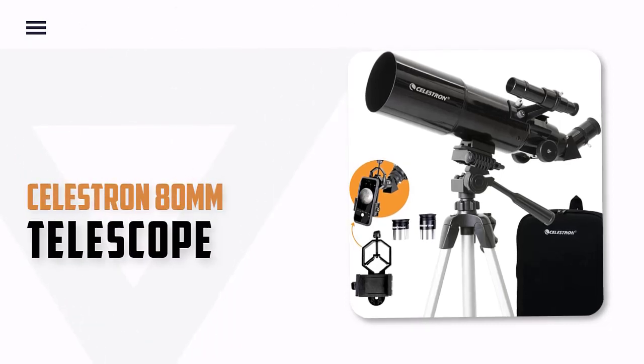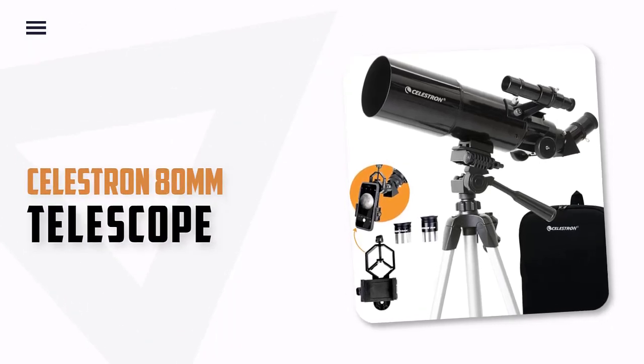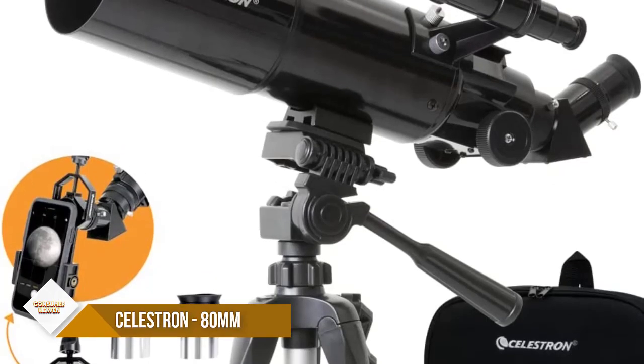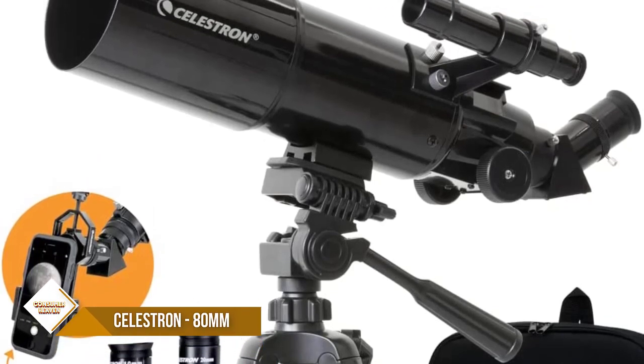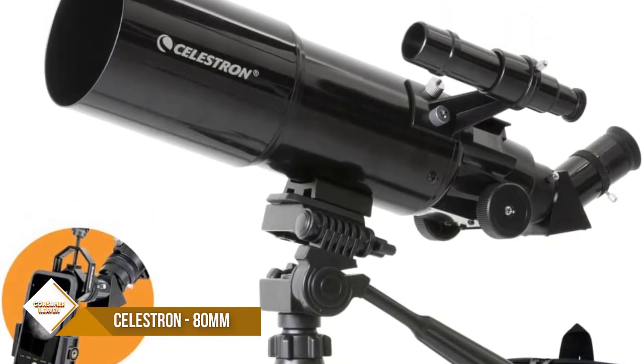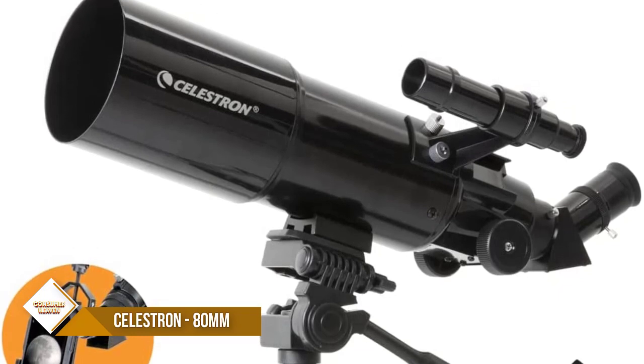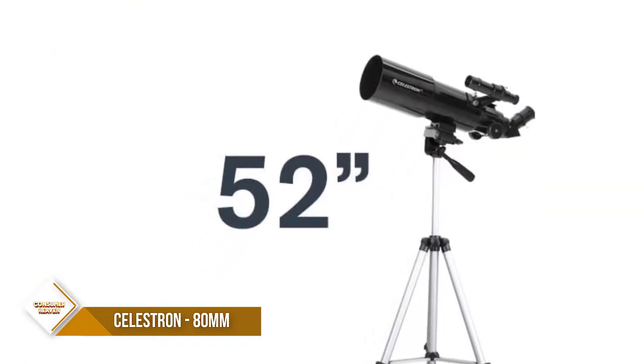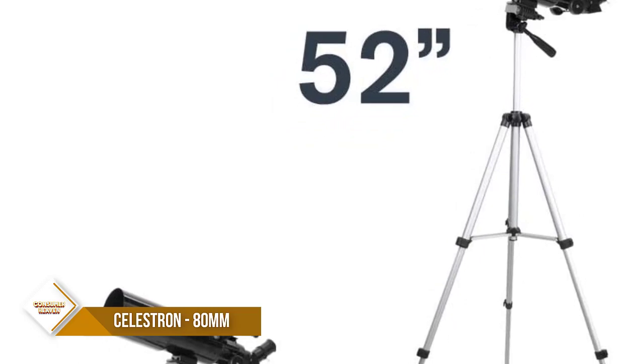Number 3. Celestron 80mm Travelscope Refractor Telescope. The 80mm Travelscope comes complete with fully-coated glass optics, a potent 80mm objective lens, a full-height tripod, bonus accessories, and a custom backpack to carry it all. Its quality is unmatched among competitors in its class.